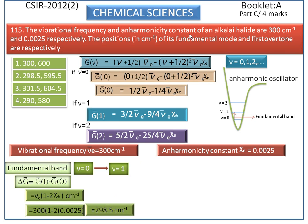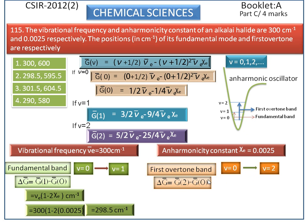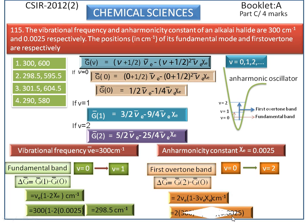Next, we calculate the first overtone. The first overtone is the energy of transition from the ground state to the second excited state, as you can see clearly. The position of the first overtone band is calculated by subtracting the energy of the ground state from the energy of the second excited state. We get the formula 2 nu-e into (1 minus 3 nu-e chi-e). Substituting the given values, we get 595.5 per centimeter.